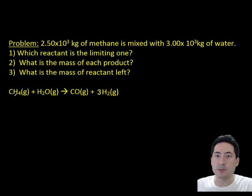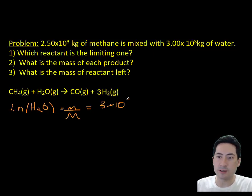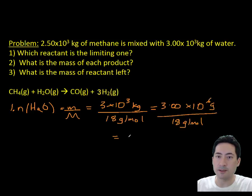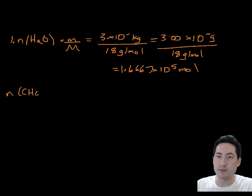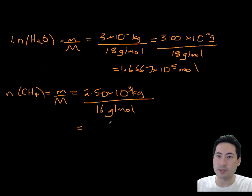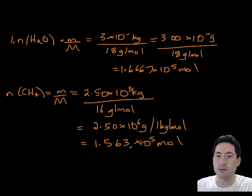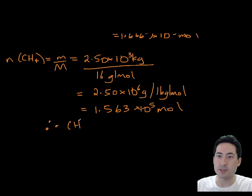Here's a problem. You have 2.5 × 10³ kilograms of methane mixed with 3 × 10³ kilograms of water—which one's the limiting reactant? We need to work out the number of moles of both. You can see from the equation that it's 1 to 1. If we have 1.5 and 1.6, the smallest one is 1.5, so methane must run out first and that's the limiting reagent.